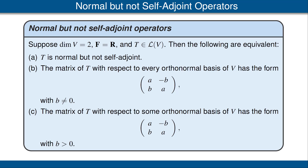And C is the same, except instead of saying for every orthonormal basis, it's with respect to some orthonormal basis, and for part C we insist that B be a positive number. Note that the condition in part B, that the constant B be non-zero, is crucial. If B were 0, then we would clearly have a self-adjoint operator, but we are describing operators that are normal but not self-adjoint.